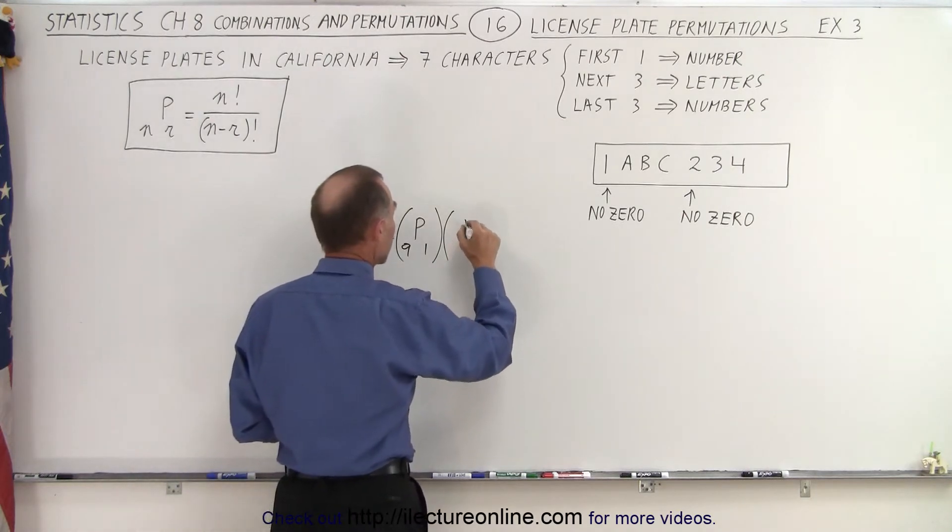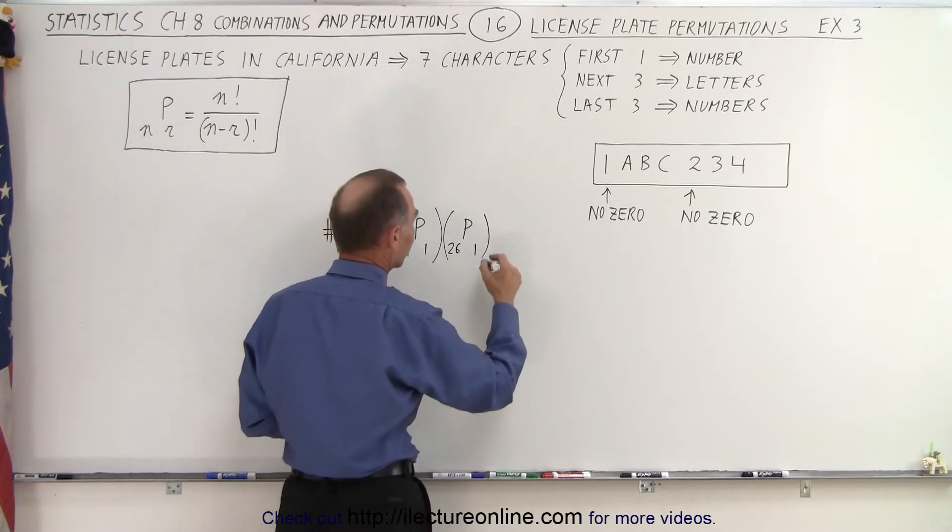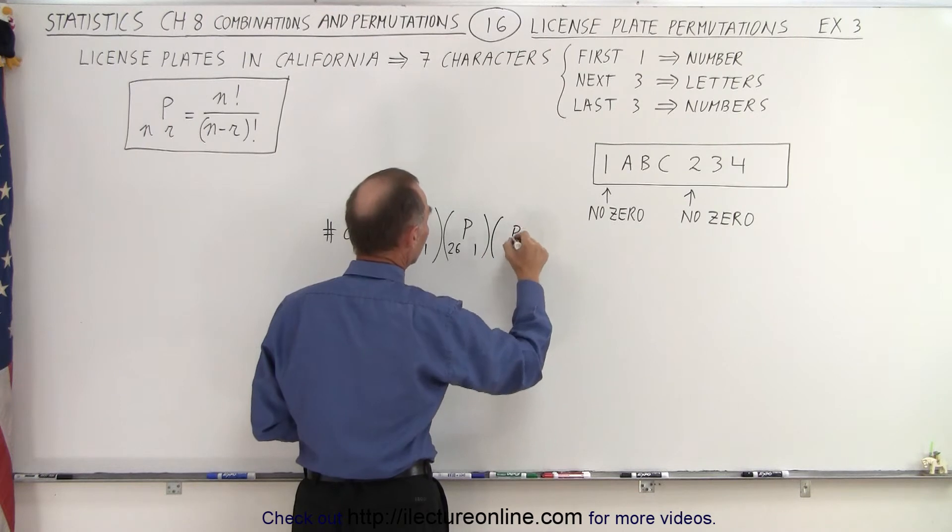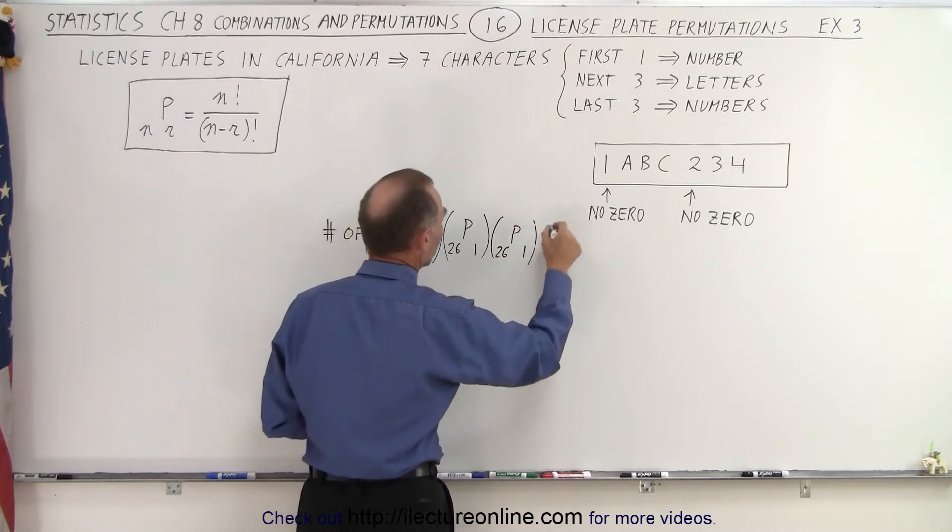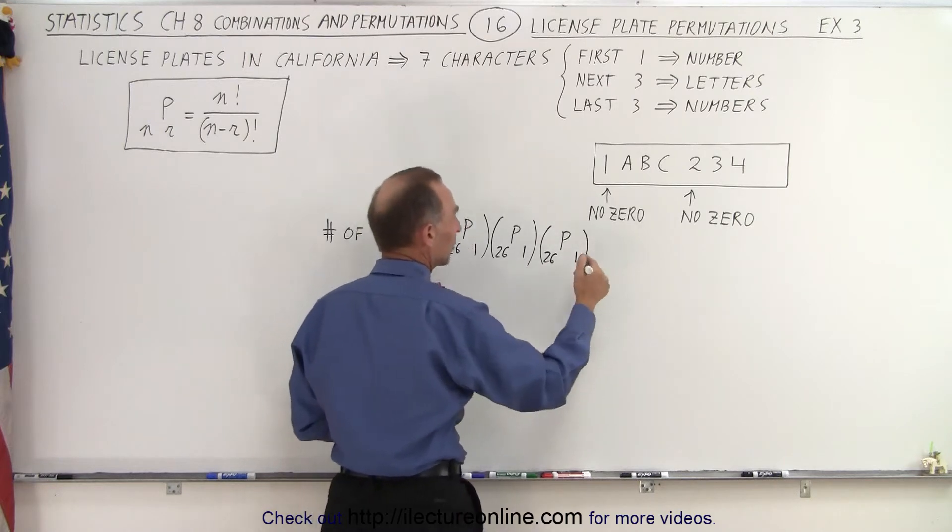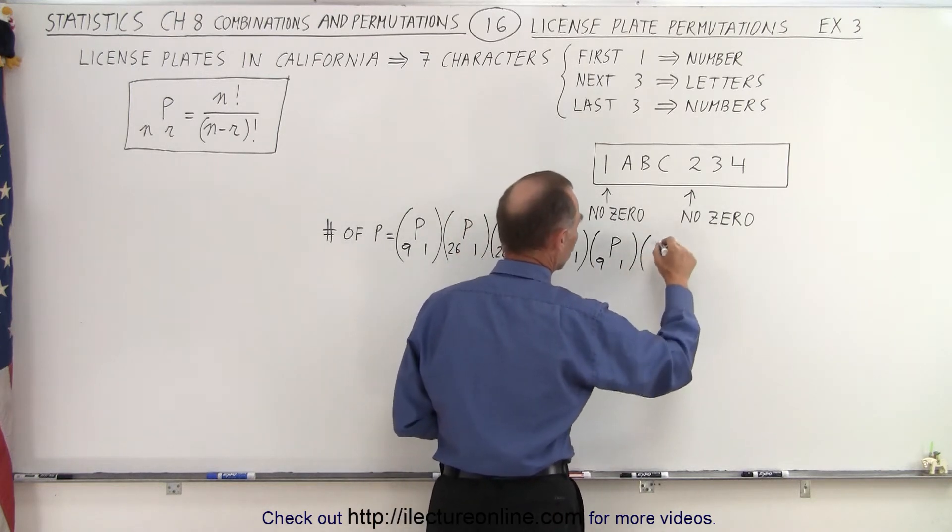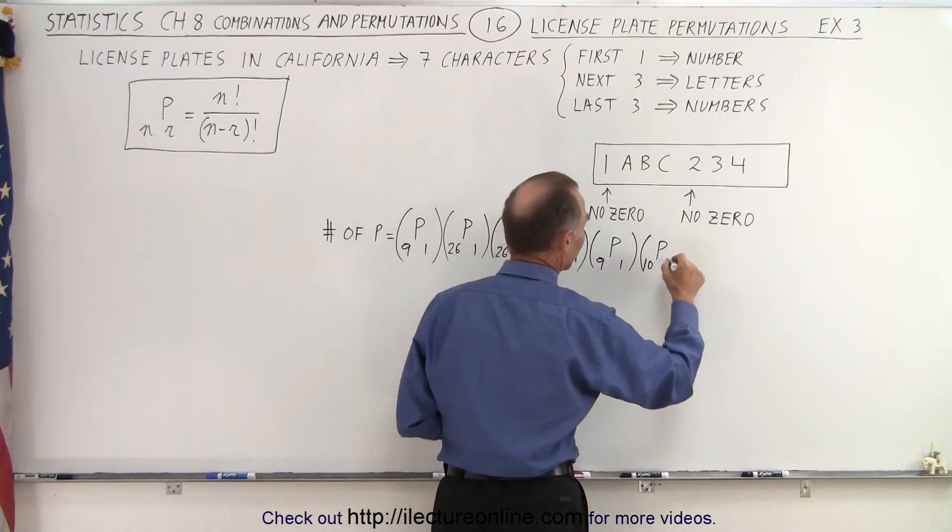That would be P(26,1), because there's 26 different letters and all of them are permissible. So we have three of those: 26 and 1, 26 and 1, 26 and 1. And then we have three more numbers. But for the first number, there's only nine possibilities, because we have to ignore zero. But for the next two, we can have 10 numbers.